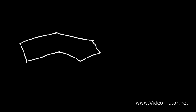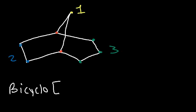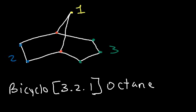Let's try another example. On the left side there are two carbons, on the right side we have three, and on top we have one. To name it, it's going to be bicyclo[3.2.1]. Three plus two plus one is six, and adding the two bridgehead carbons gives eight. Eight is associated with octane, so it's bicyclo[3.2.1]octane.